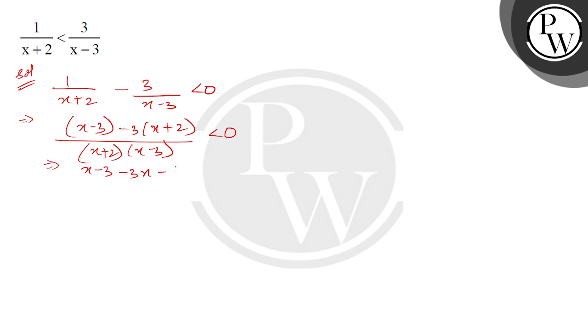This is x minus 3 minus 3x minus 6 by x plus 2 into x minus 3 less than 0. Now how much do you have? You have minus 2x minus 9, correct?